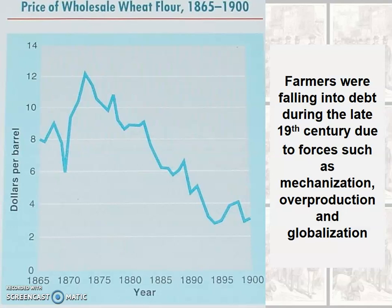So American farmers are cranking out higher and higher volumes of their crops, but they're also in competition with farmers in other countries. The United States' economy is now intertwined with the global economy by the turn of the 20th century, and American farmers are not the only ones supplying the globe with wheat or cotton. So the fortunes of many farmers continue to fall over time. For those finding themselves in debt and unable to pay it off, they're losing their land. Creditors are foreclosing on family farms.